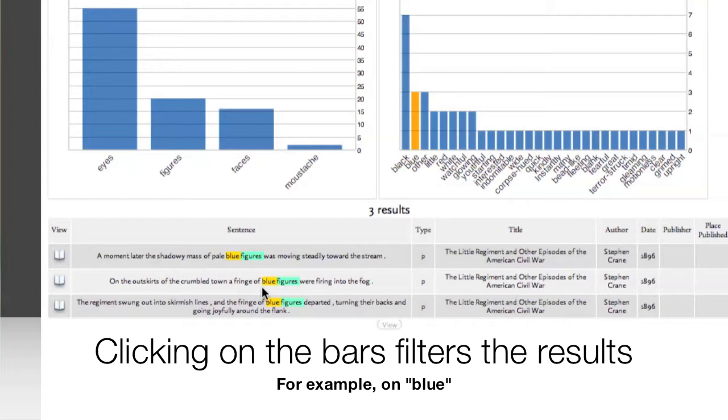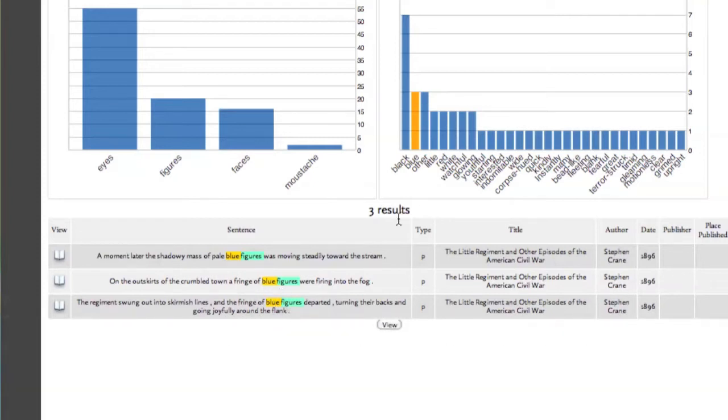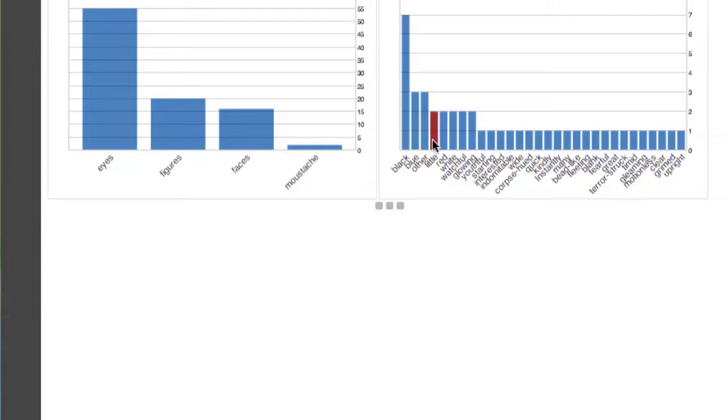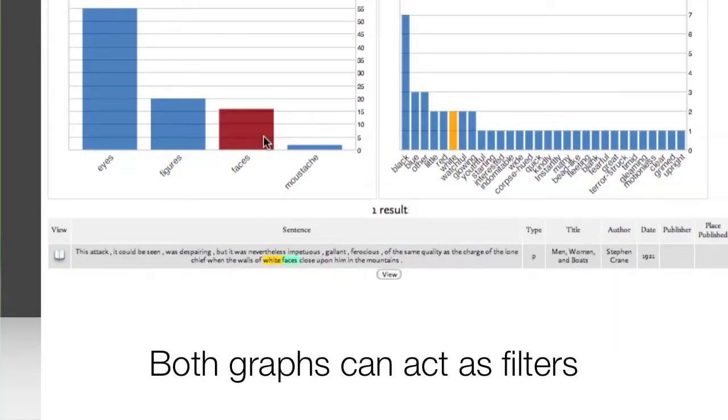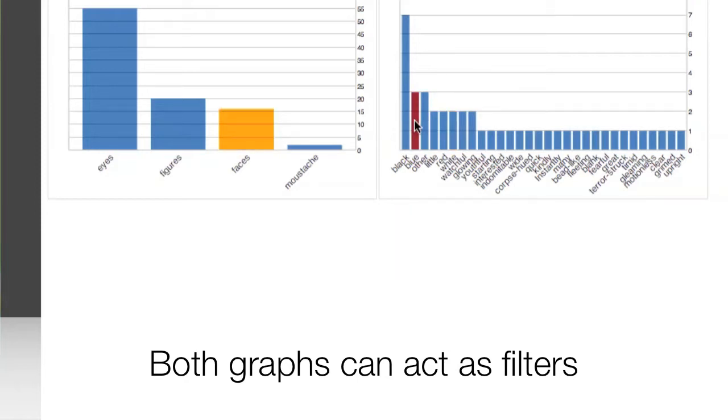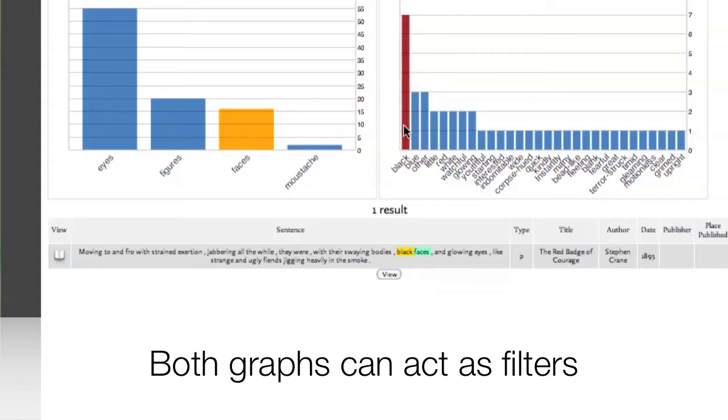Again, I have a list of search results. And filtering on the right-hand side bar graph filters the results to just that word. However, this time, both graphs can act as filters. For example, blue faces has no matches, but blue eyes, black faces, does.